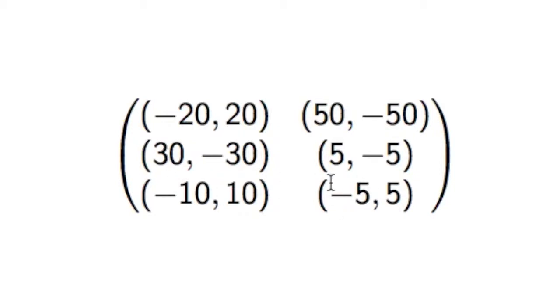Because 30 is better than negative 10, and negative 5 is worse than 5. So this strategy can simply be removed. It's dominated.